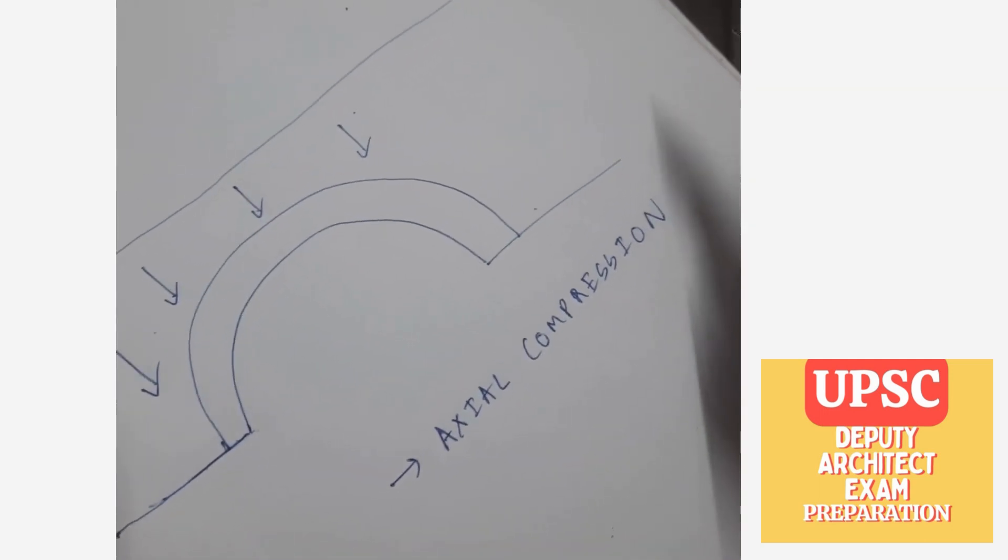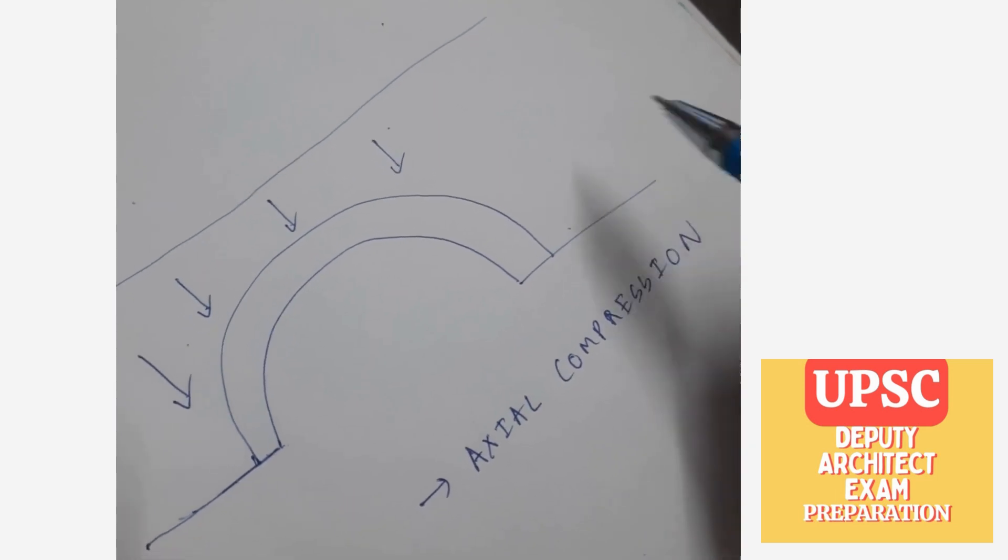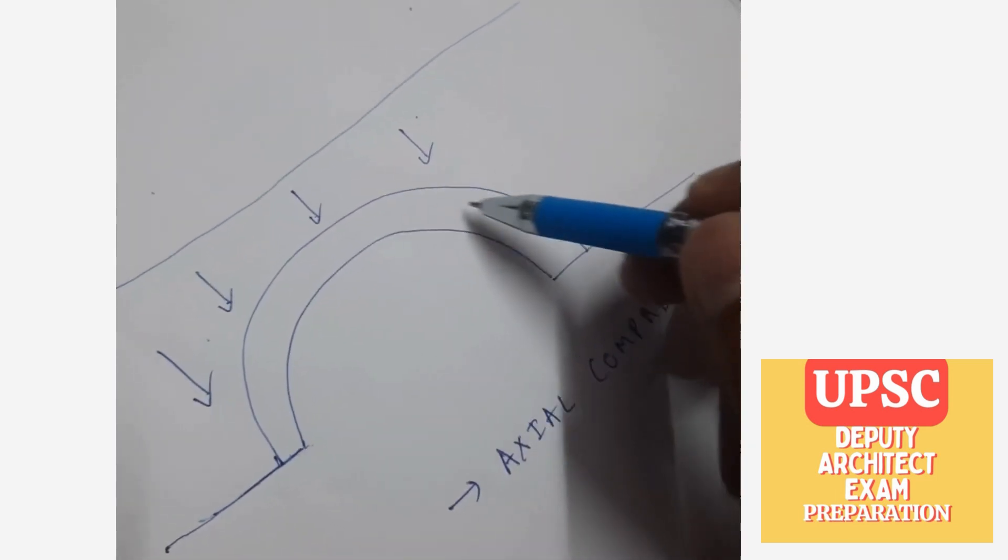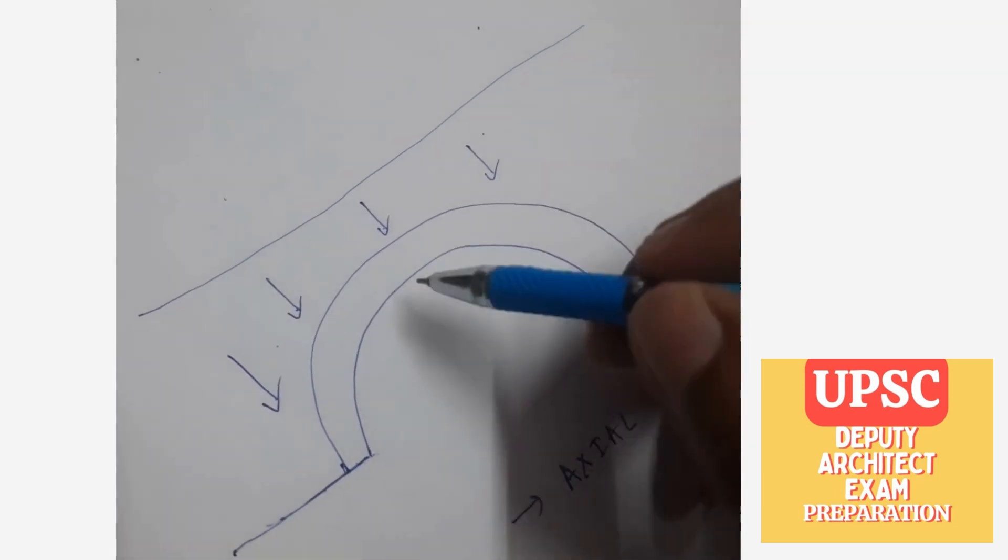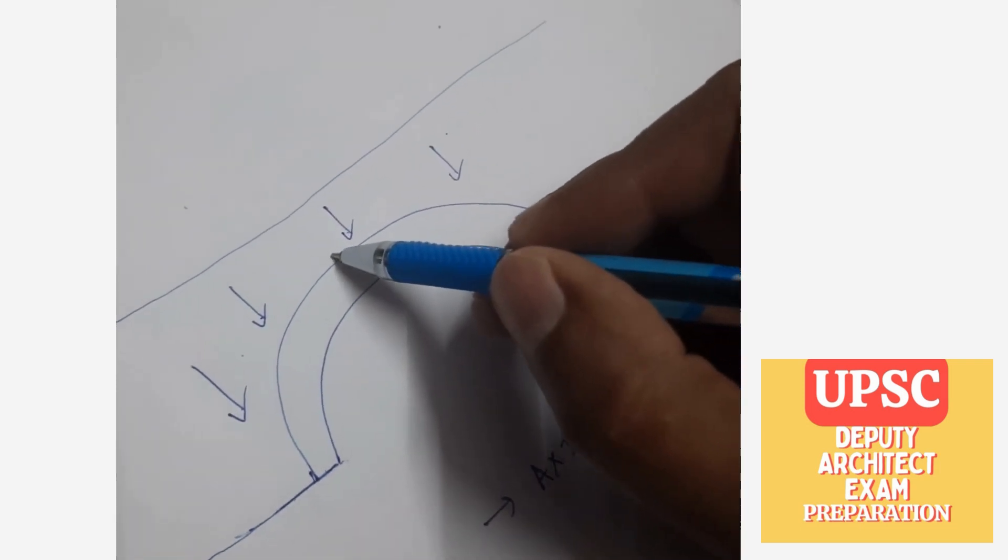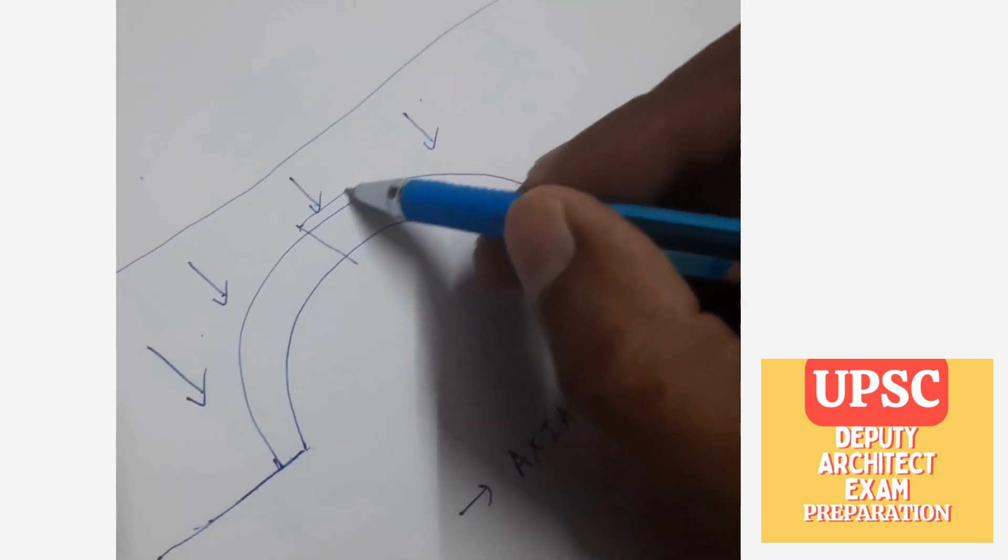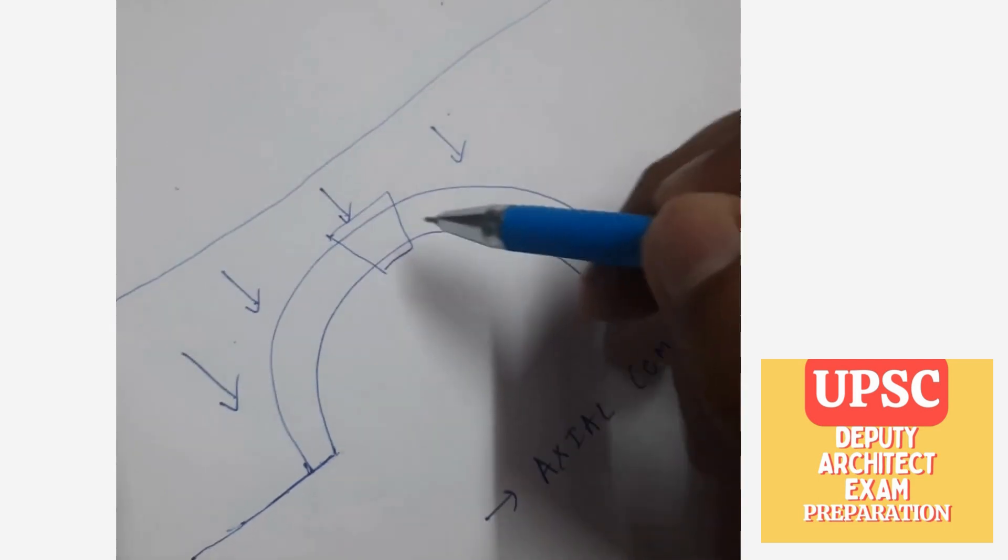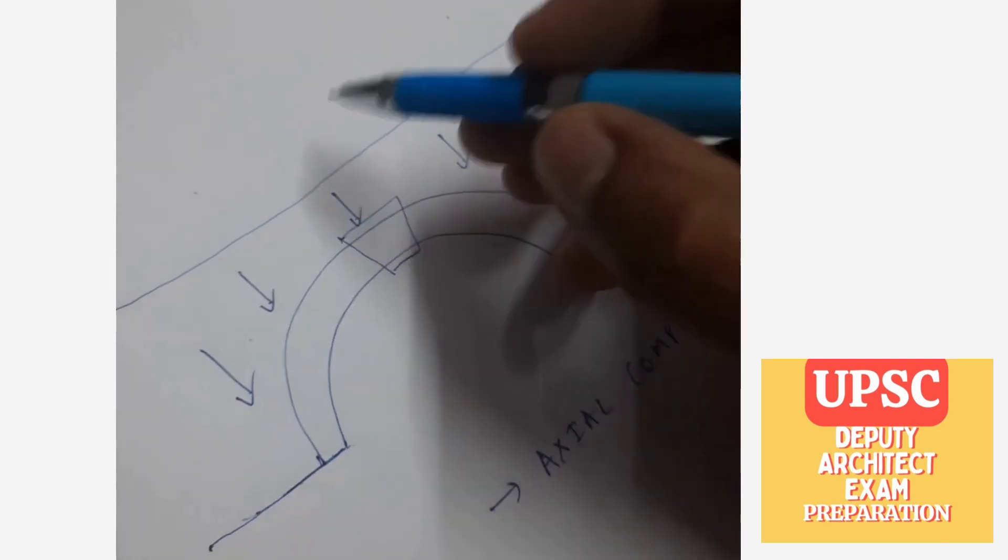Let's understand the parts of an arch. So this is an arch. Normally, what we will do is in the center of an arch, this element is called keystone.